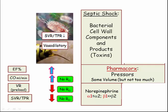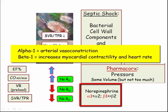Moving on to vasodilatory shock, and specifically septic shock — the non-pressor-related derivatives deal with bacterial cell wall products such as lipopolysaccharides and bacterial products such as staph exotoxin associated with toxic shock syndrome. Insofar as treatment, this is the classic scenario associated with the use of norepinephrine, which has alpha-1 properties to raise mean arterial pressure and beta-1 properties to stimulate cardiac contractility and increase heart rate.